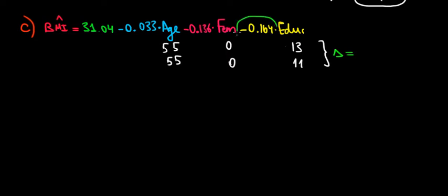So that difference is going to be that the first person is going to have a BMI which is lower by 2 units times 0.164 per unit. So 2 units.